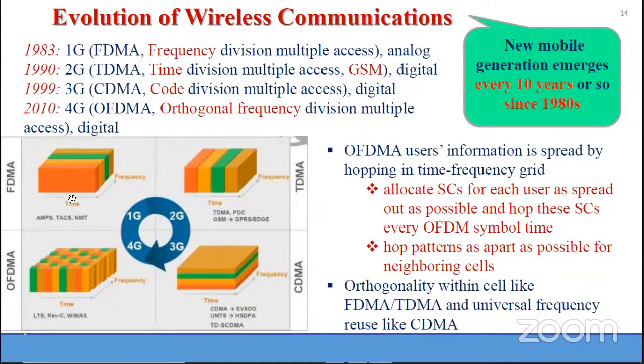In the first generation, we have frequency on one axis and time on the other. All users are simultaneously transmitting, but in the frequency domain they have separate identities — separate slots are available.